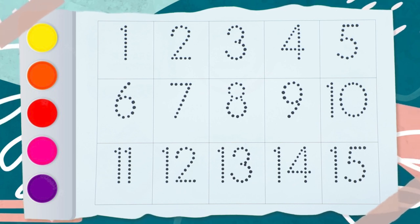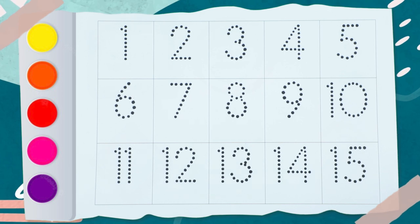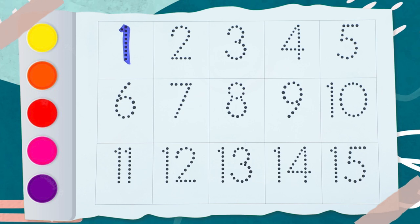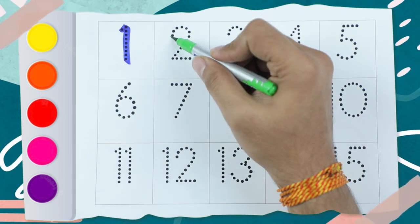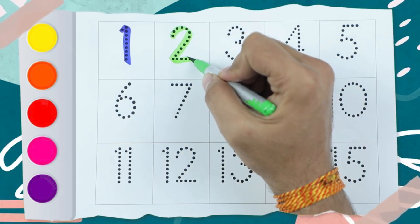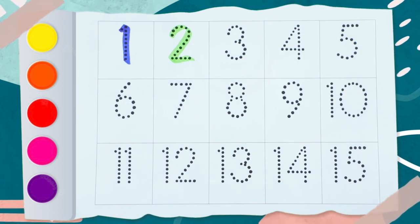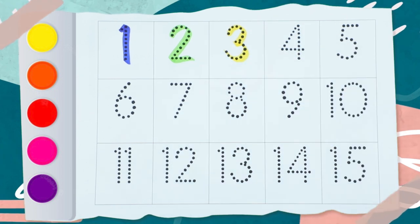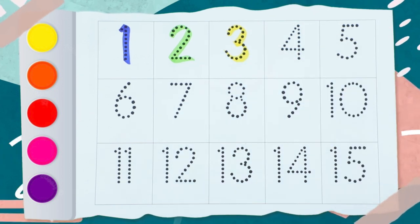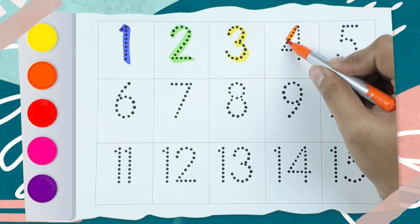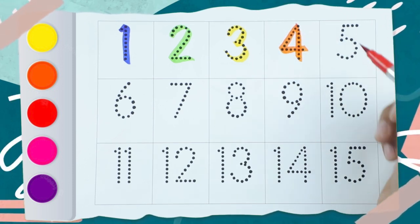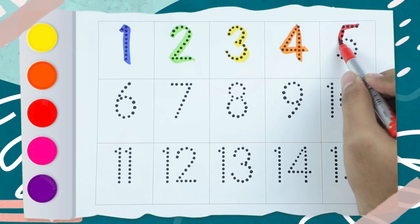10, 11, 12, 13, 14, 15. Number 1 is blue color. Number 2 is green color. Number 3 is yellow color. 1, 2, and 3. Now 4 — 4 is orange color. And now red color with number 5.